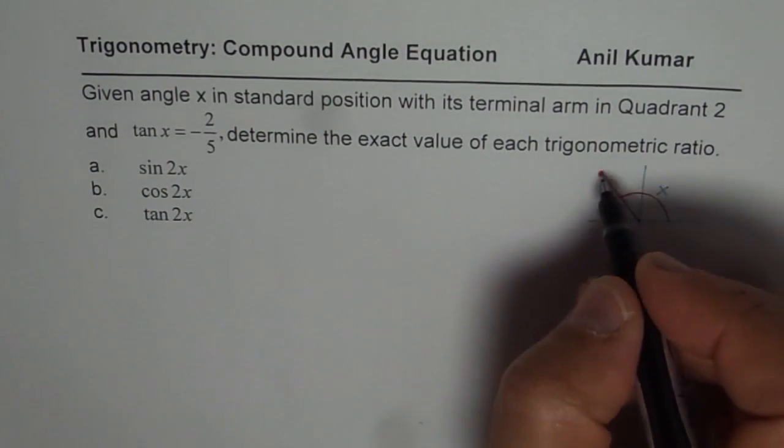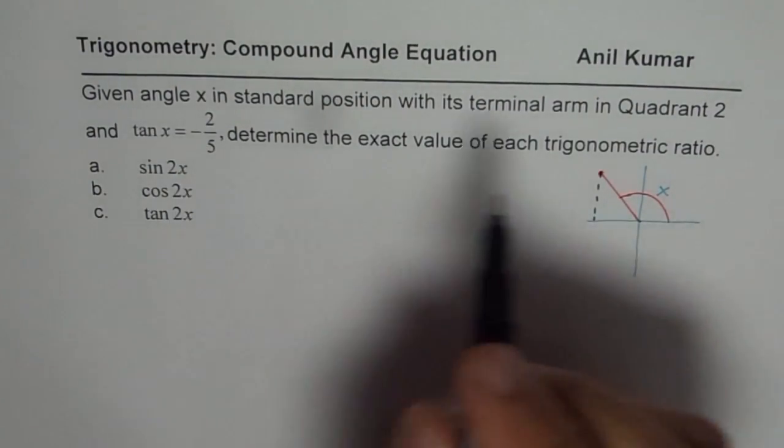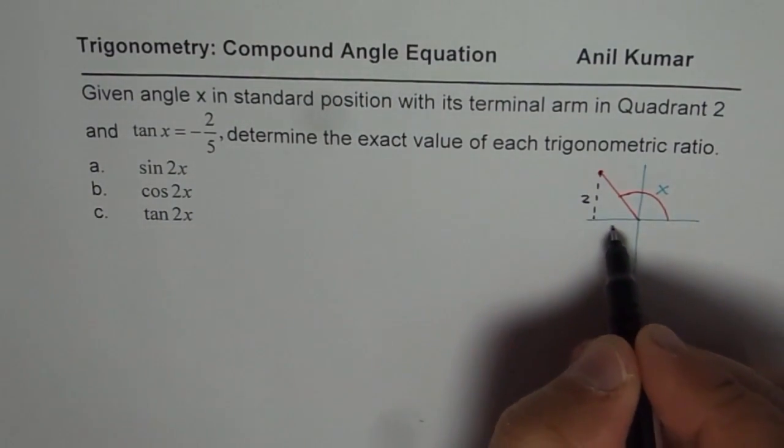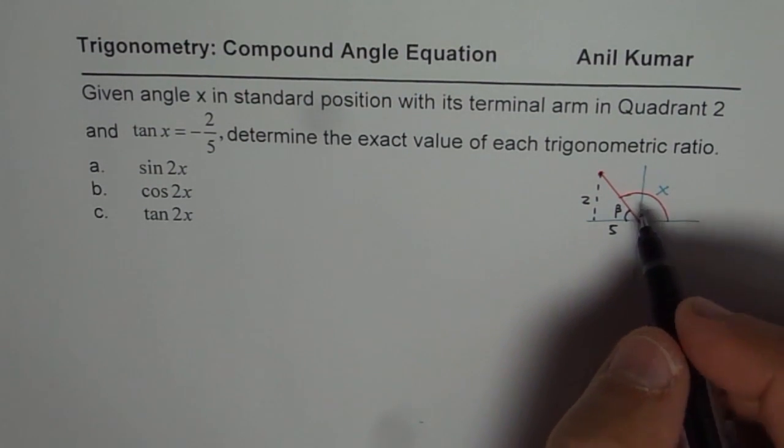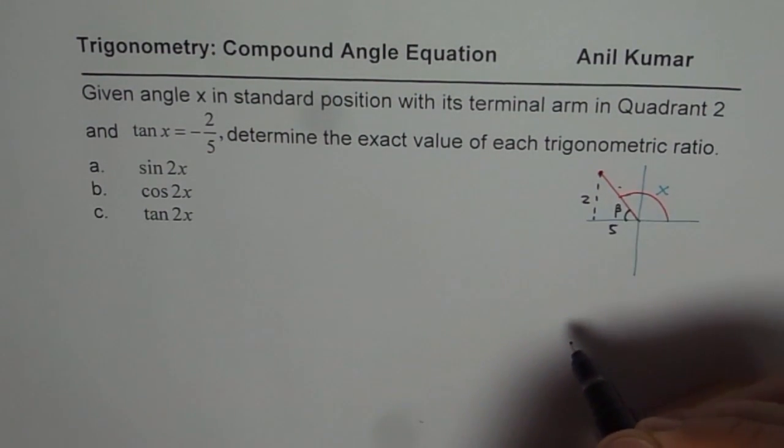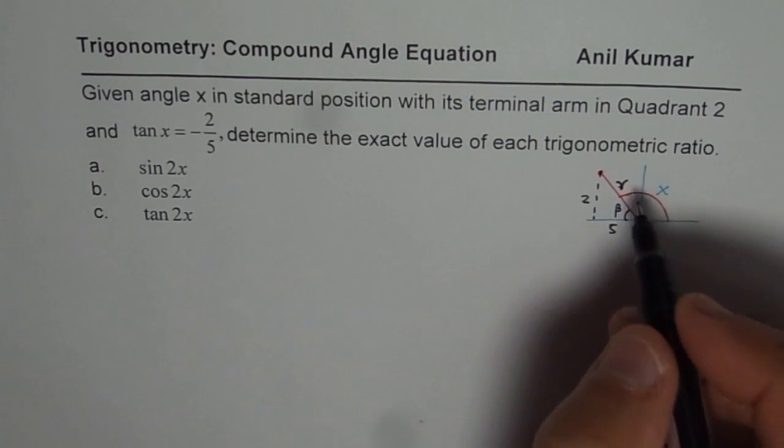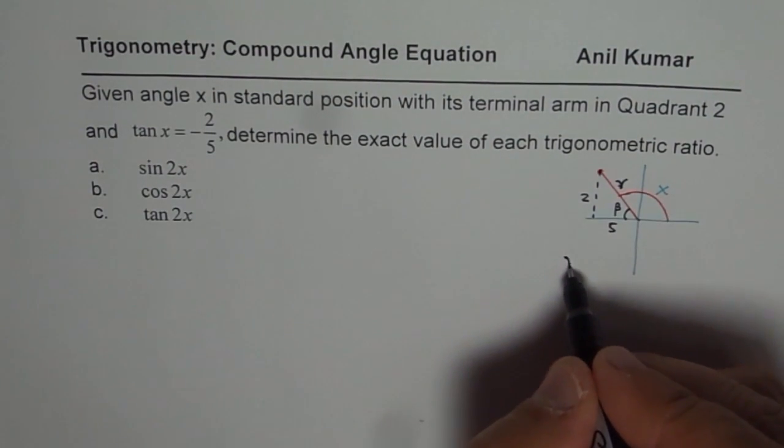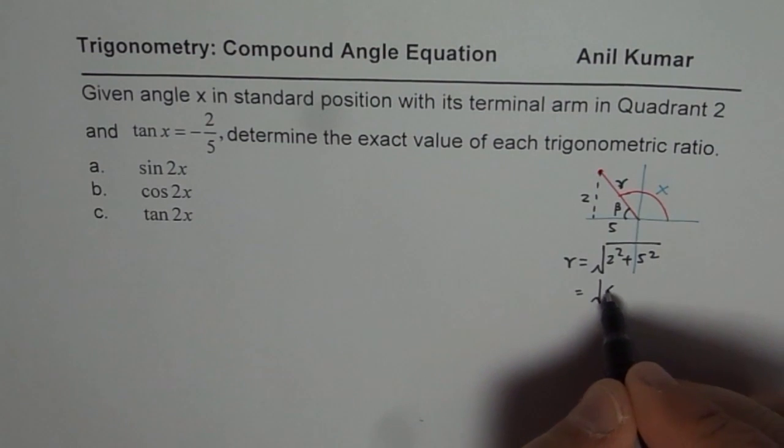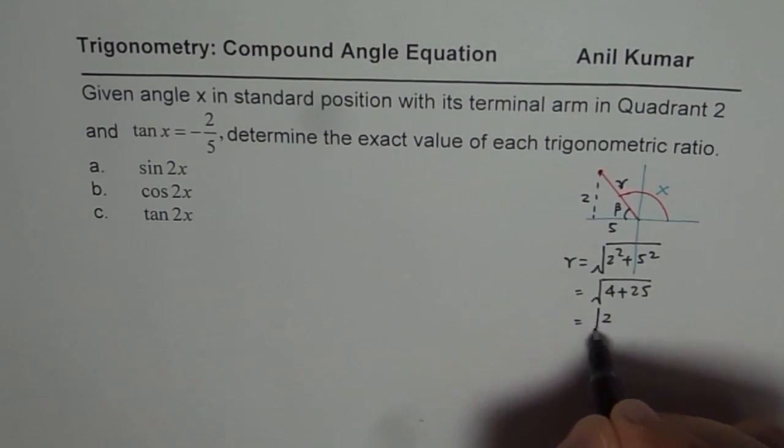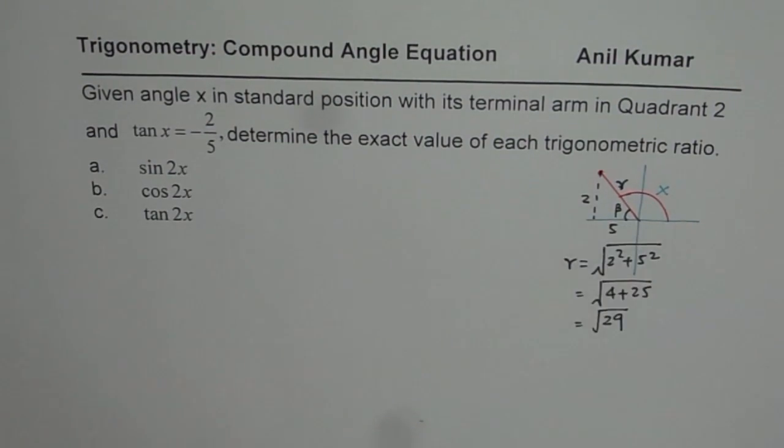In this particular triangle, the opposite side is 2 and adjacent is 5 and that is the angle, the acute angle, let me call it beta. First step is to figure out the hypotenuse. Let's say this is r, so calculate r first. R will be equals to square root of 2 squared plus 5 squared, which is square root of 4 plus 25 or square root of 29.